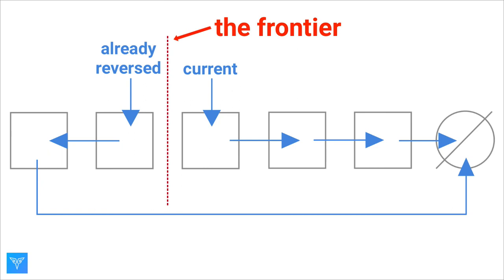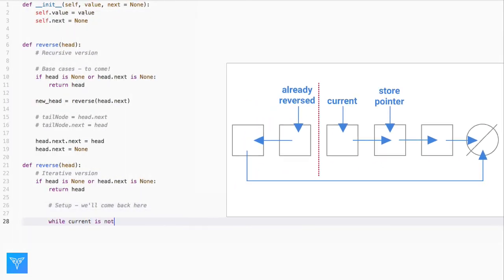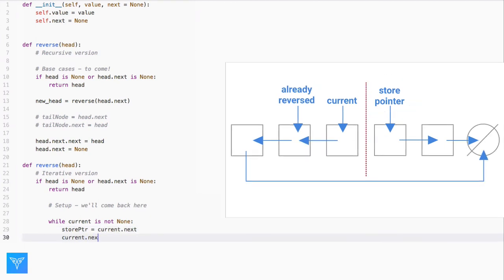At each iteration, we want to advance the frontier one step. Once we change current's next pointer to point backward, we lose access to the rest of the list. Therefore, we create a store pointer to the next value in the forward list to remember this position. Once we have saved this new node, we can swap the direction of current.next. Once we've done that, the frontier between the reversed and forward lists has advanced one location.